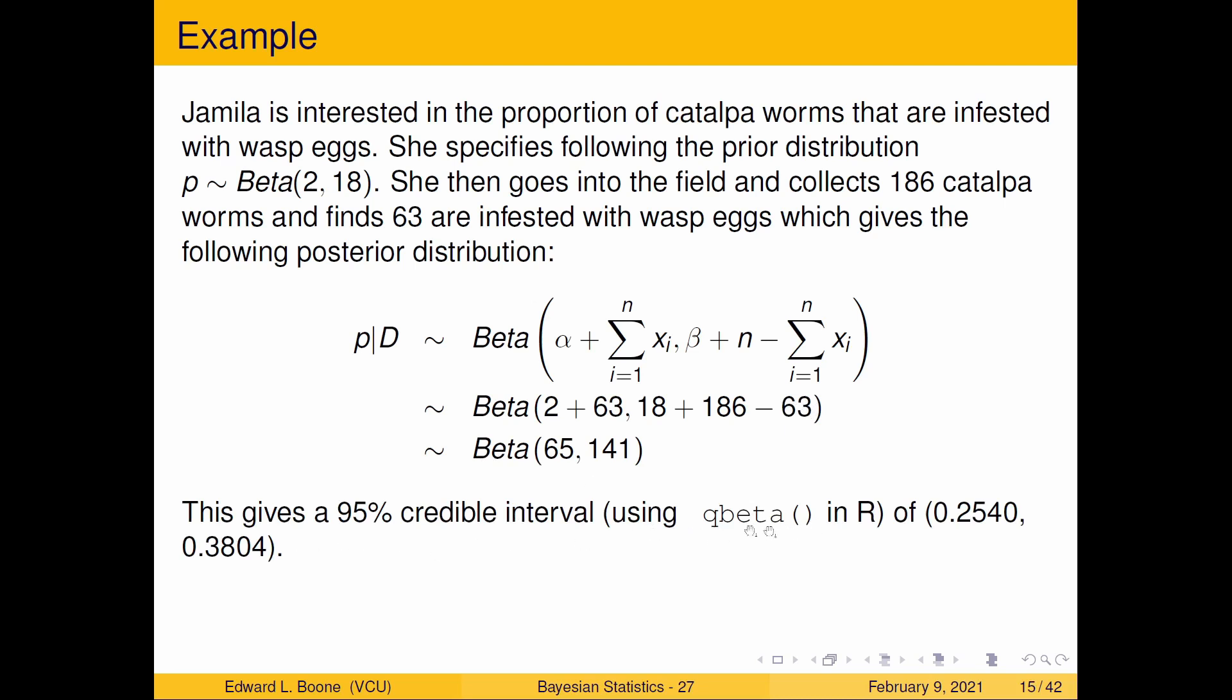And if we did a credible interval on that, we could see that using Q beta in R, we end up with 0.2540 and 0.380 as our credible interval now that we have this information. And it combines both the prior information and the information from the data together into this interval. So those two seem pretty easy.